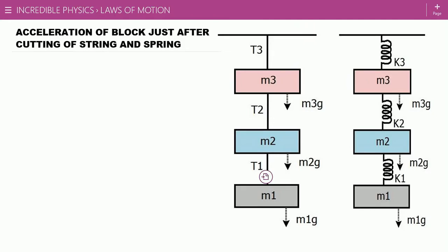If we cut one of the strings, suppose string number one, then its tension becomes zero instantly. On the other hand, the other two strings — string number two and string number three — change their forces instantly. While if we talk about springs, if we cut spring number one, its force becomes zero instantly, while the other two springs don't change their forces just after cutting. So if we cut spring number one, there will be no change in the forces of spring number two and three just after cutting.